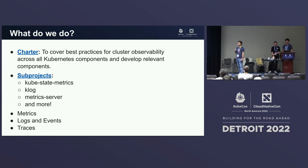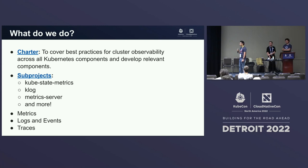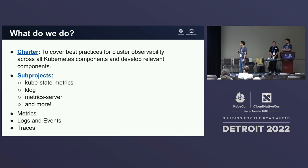We have a large number of subprojects — kube-state-metrics, which is quite popular, klog, which is used in basically all Kubernetes components, and metrics server, which is used for auto-scaling, among many more. We also work a lot on Prometheus metrics instrumented across all Kubernetes components, and logs across all Kubernetes components. We're working on structured logging so you can get a structured format instead of dealing with freeform text, as well as traces.